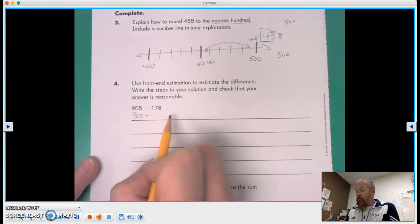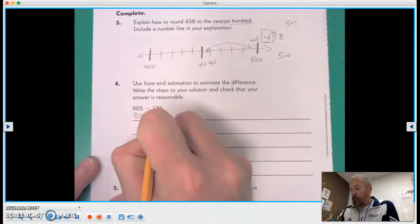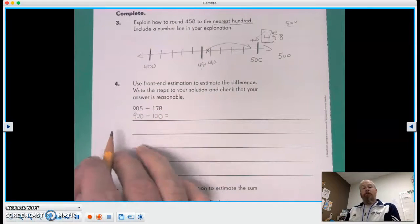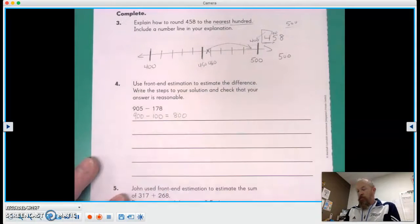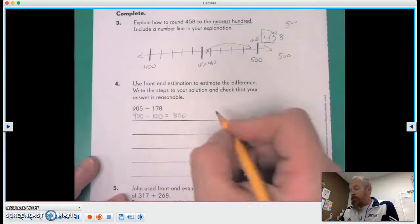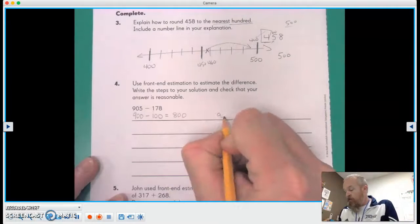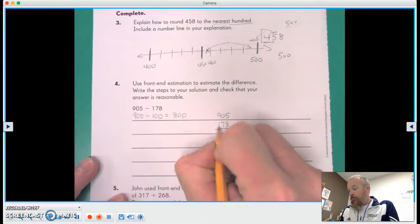And then again, we're gonna take just the first digit, that leading number, the 100. So 900 minus 100 is 800. And that is how we would do the front-end estimation for our difference. But let's go ahead and check now. Let's do 905 minus 178.